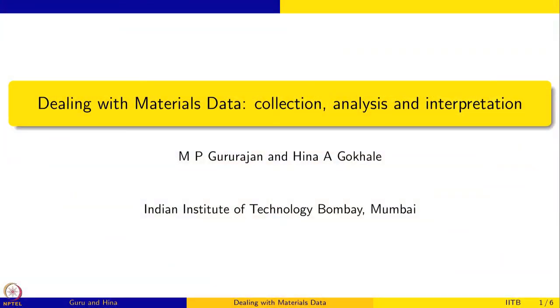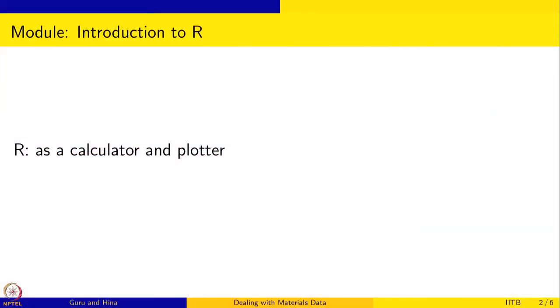Welcome. This is the course on dealing with materials data. We are going to discuss the collection, analysis, and interpretation, and we are using R to do this data analysis. In this section, we are going to use R as a calculator and plotter — for understanding data, how to plot data, how to interpret data. I want to show you that R can be used simply as a calculator and plotter, taking specific examples from materials science and engineering.